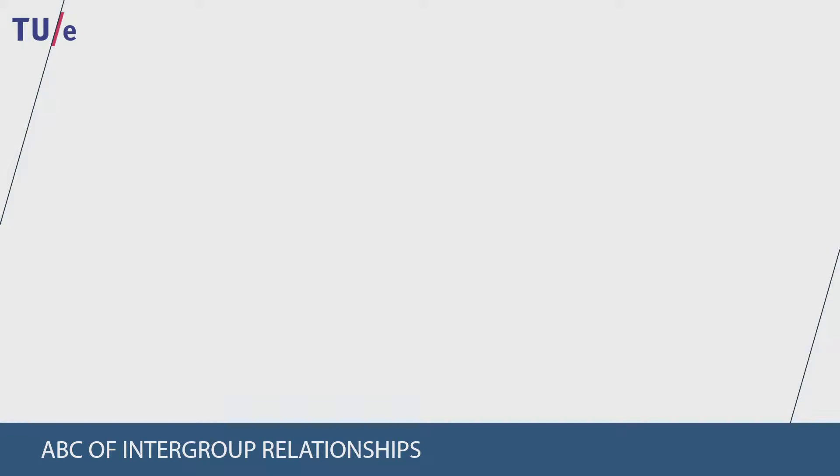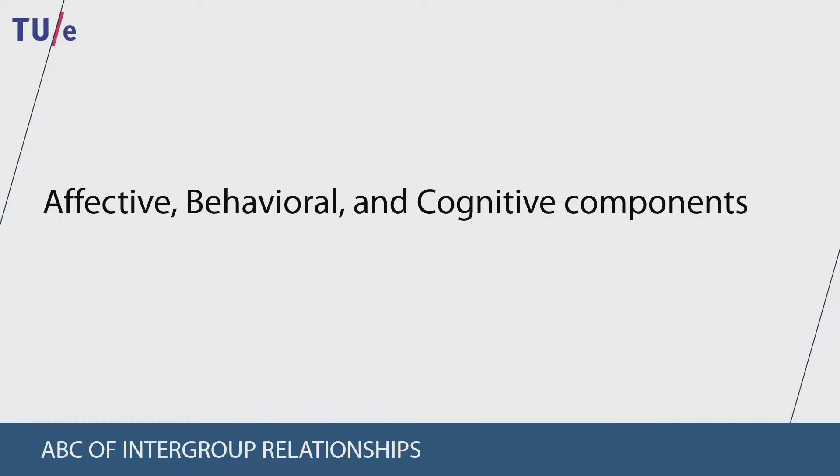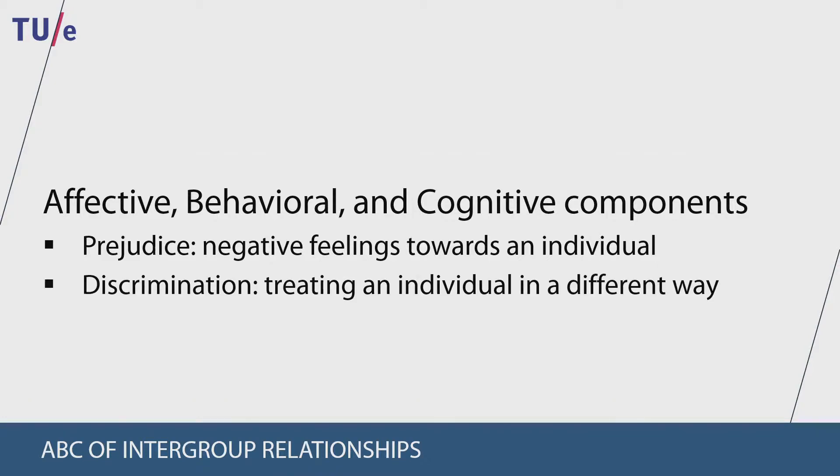The ABC of intergroup relationships stands for the affective, behavioral, and cognitive components of intergroup relationships. The affective component is prejudice, which is a negative feeling towards an individual based only on his group membership. The behavioral component is discrimination, which is an unequal treatment of people based on the group to which they belong.